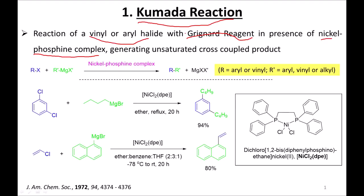So basically, let's say we have an alkyl, aryl, or vinyl halide — that is our substrate — and we have a Grignard reagent. We use a nickel phosphine complex as catalyst and we get an R-R' bond along with MgXX', which could be MgCl₂ or MgBr₂ depending on the halogens present.